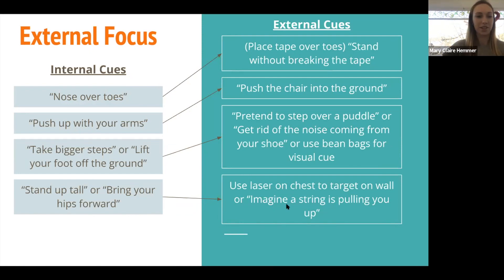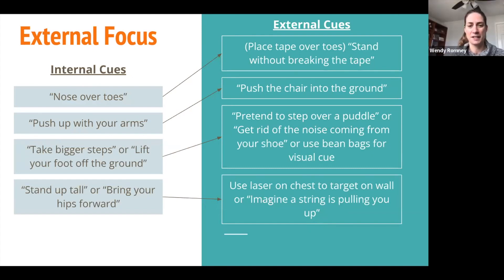We had one patient who had significant forward trunk lean when walking on the treadmill. We strapped a laser to his chest and put a target on the wall, telling him to keep the laser on the target — anytime he leaned forward, the laser would drop and he would have to correct himself. MC and I were involved in a class last summer with 19 patients with stroke, incomplete spinal cord injury, and Parkinson's disease. When we decided to implement the OPTIMAL theory, we had to make a purposeful attempt to get rid of our internal cues and start using external cues. Making a chart and holding each other accountable for changing our cueing techniques was the hardest part of the class.